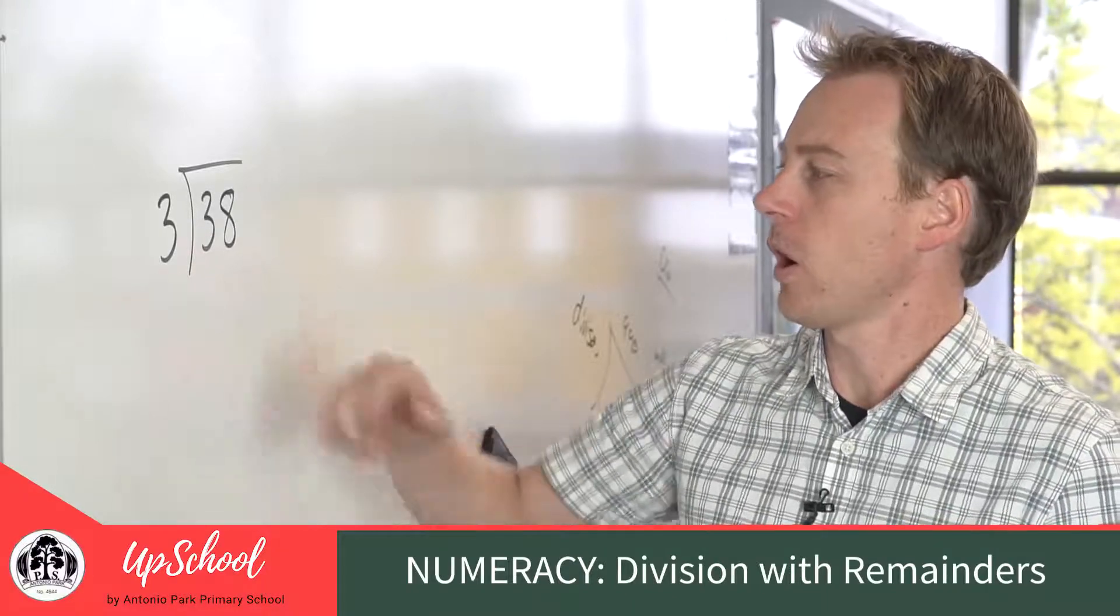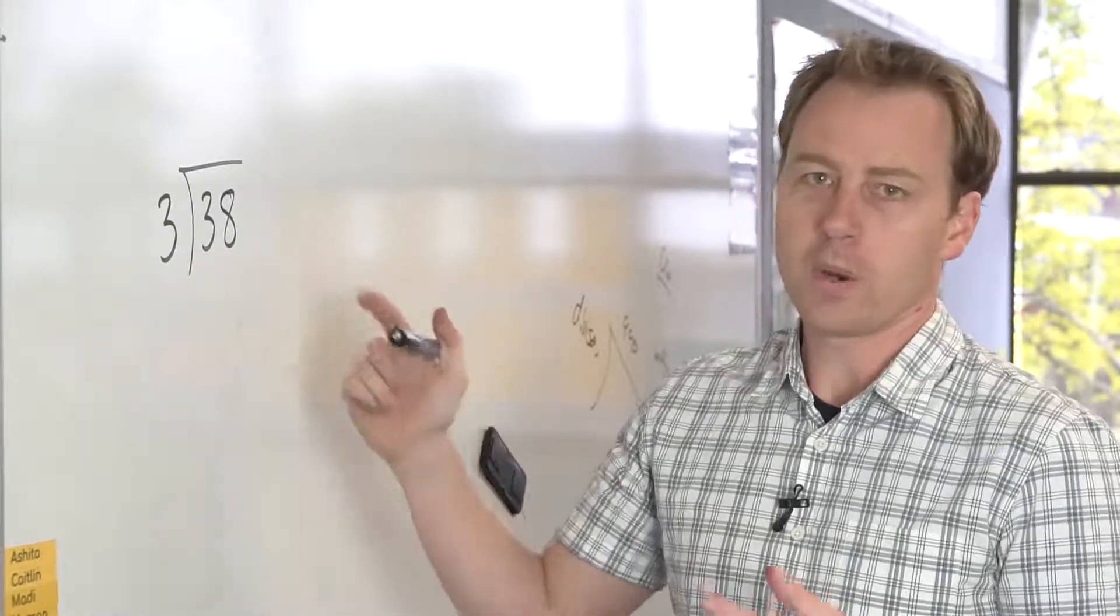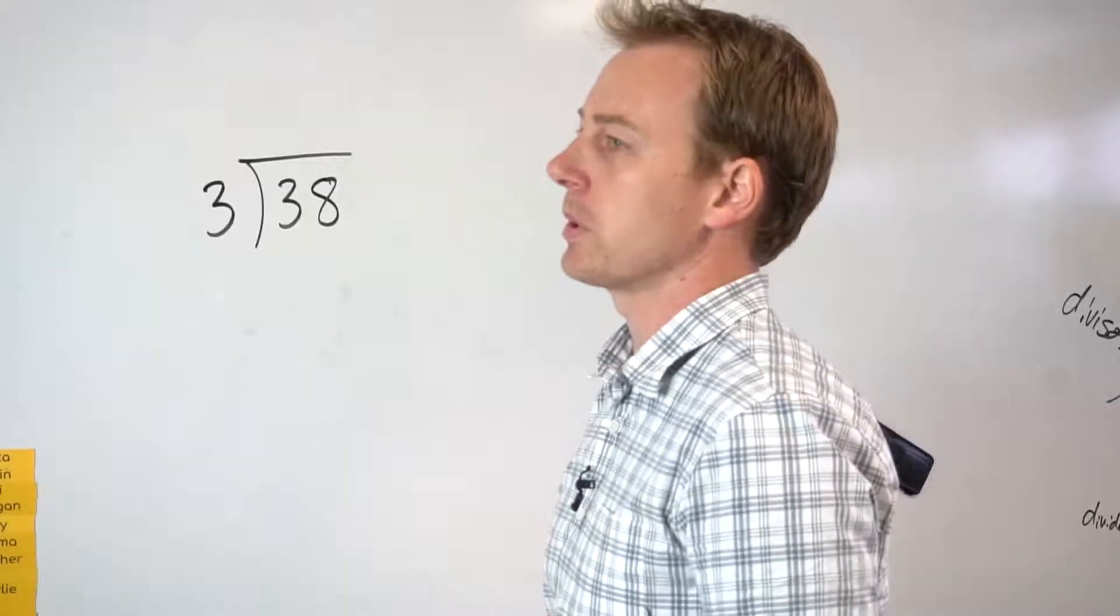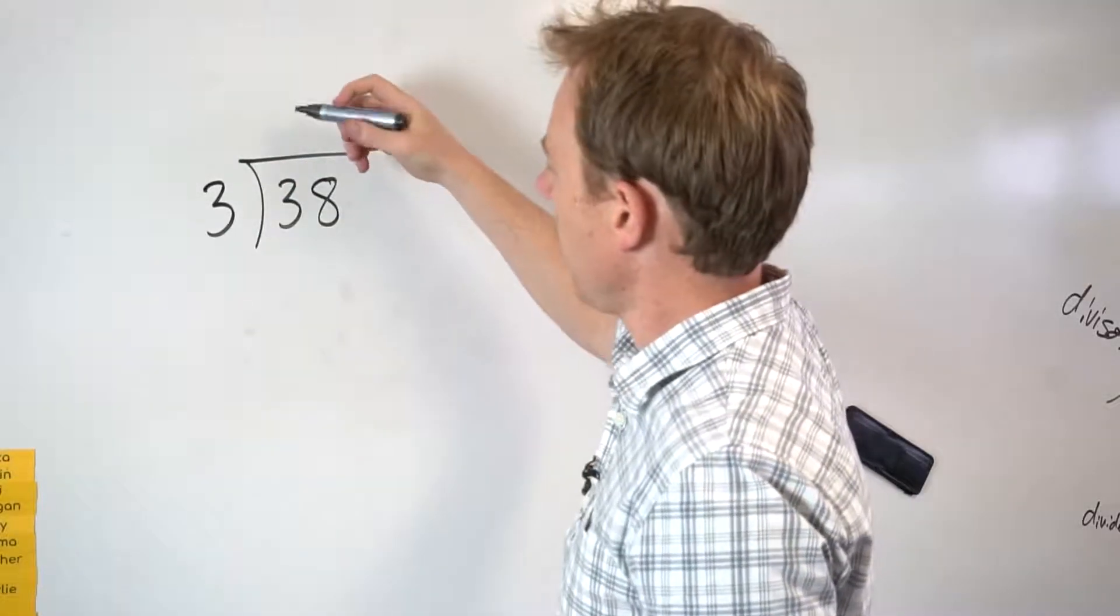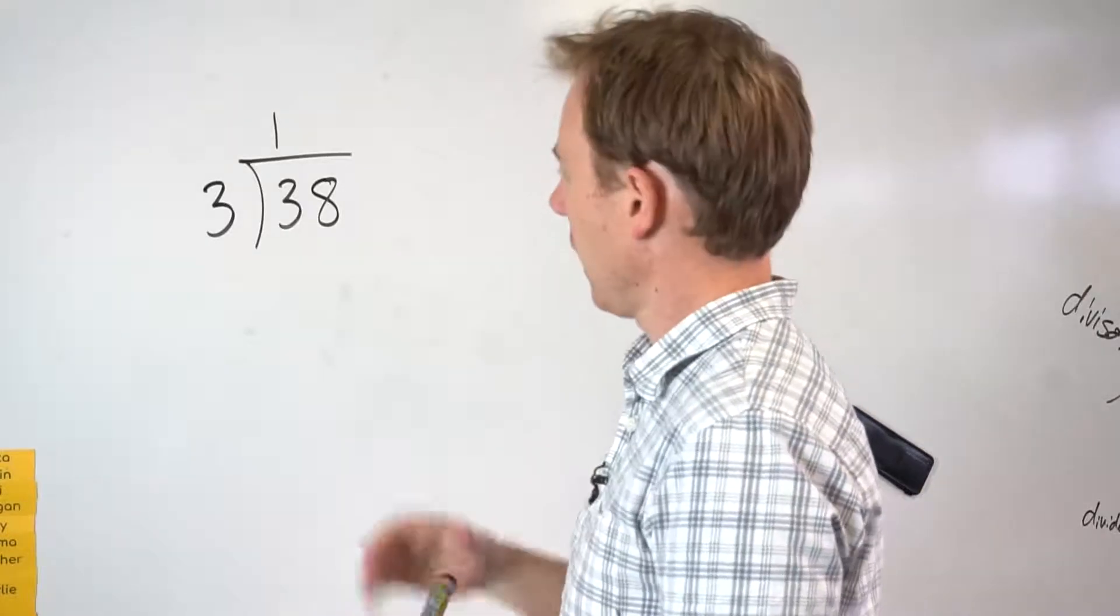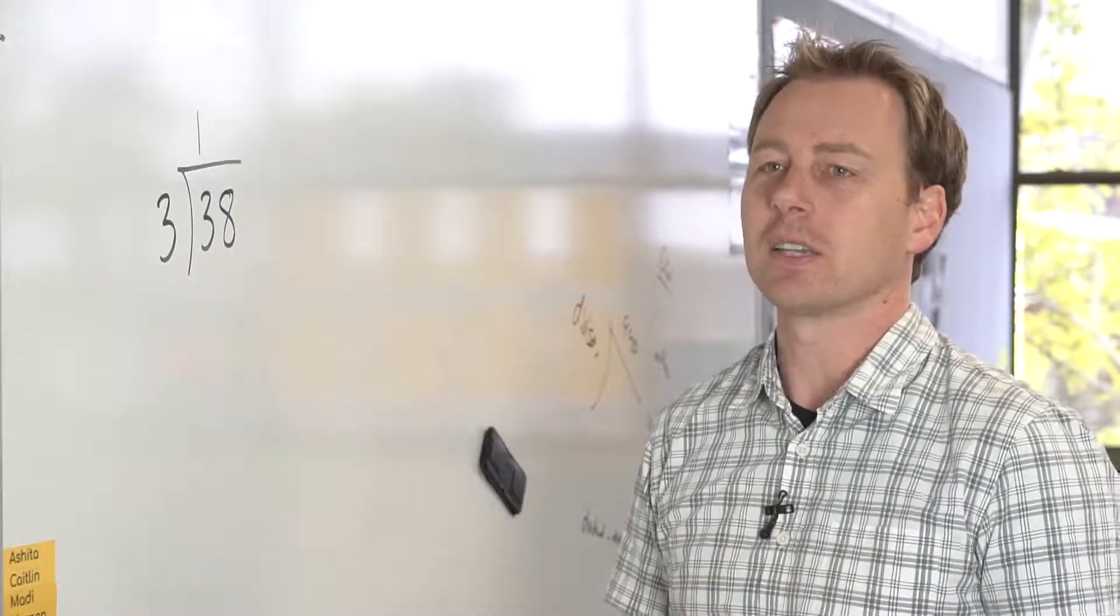So we've got 38 divided by 3. We always start with the biggest number when we're doing division. So in this case, 3 divided by 3 is 1, and then 8 divided by 3. I can't do evenly.